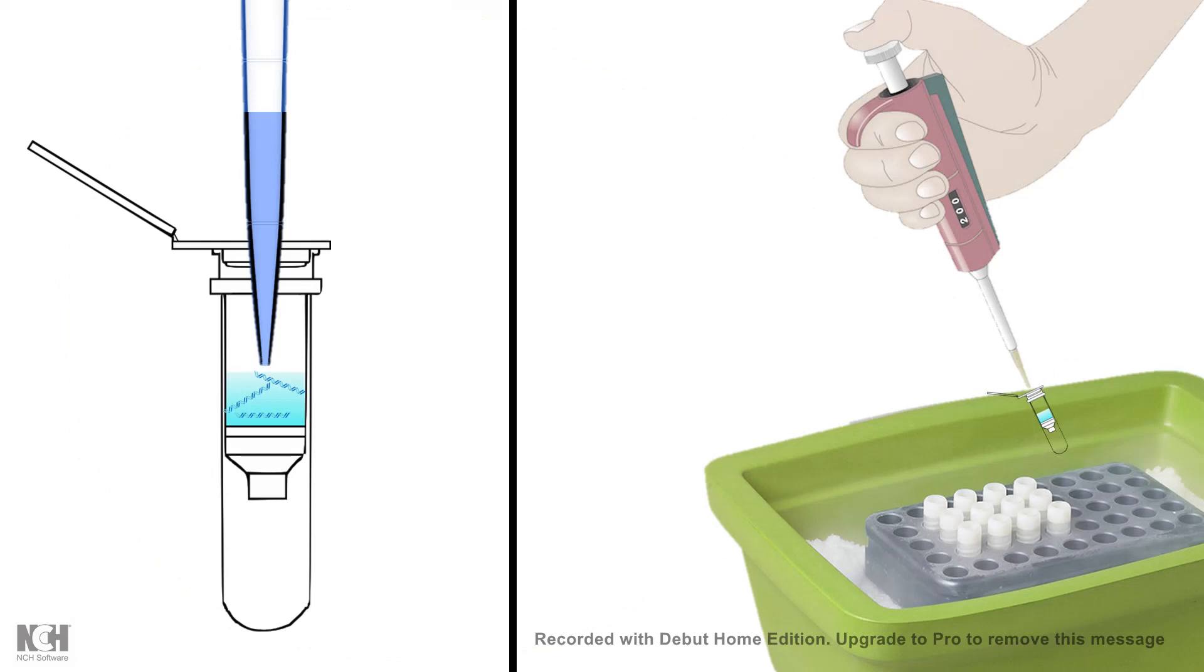First you add your DNA sample which is not pure, maybe having several other impurities such as phenol or protein. You allow this to pass through the column and this is the binding step.